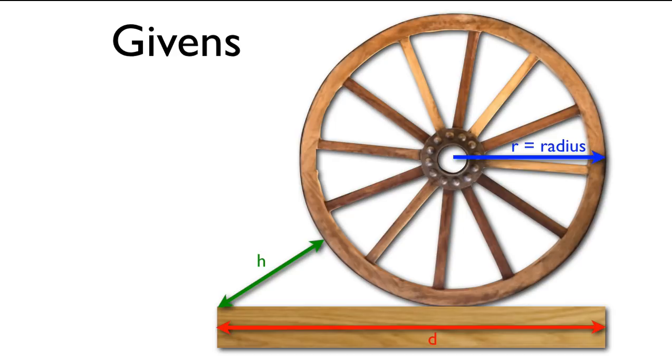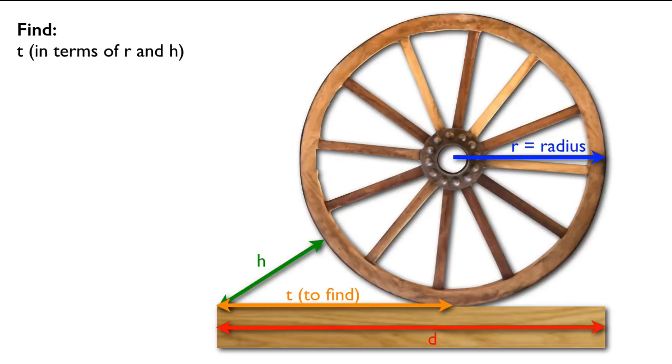So again, here are the givens: R, H, and D. And you're going to find first T in terms of R and H. Then you're going to find B in terms of R, H, T, and D.